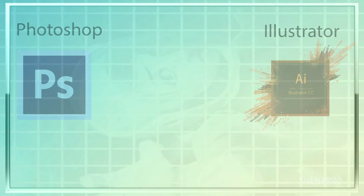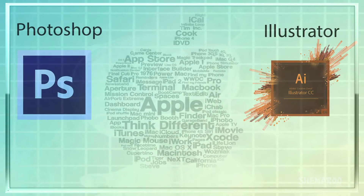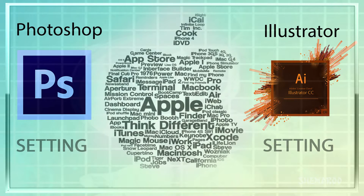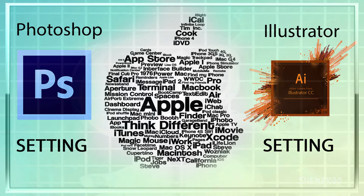The best way to describe a grid in graphic design is a series of intersecting vertical and horizontal lines used to organize and structure content. Whether you're working in InDesign, Photoshop, or Illustrator, setting up a grid enables you to get your composition right and balance your type and imagery.